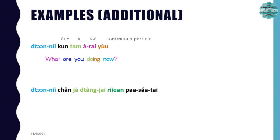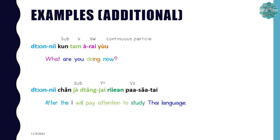Let's have a look at the second sentence, which is an example for หลังจากนี้, meaning 'after this.' The sentence is หลังจากนี้ฉันจะตั้งใจเรียนภาษาไทย. It has ฉัน as the subject, จะตั้งใจ meaning 'will pay attention to' as the verb, and ภาษาไทย as the object. So this sentence means 'After this, I will pay attention to studying Thai.'